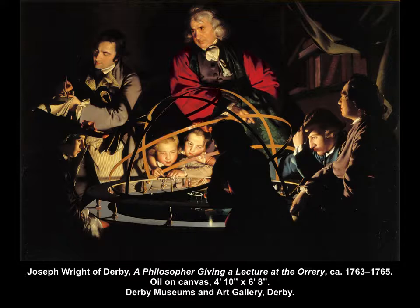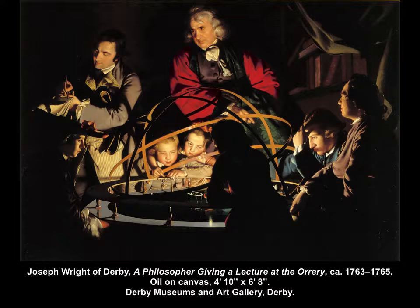Wright's use of light and shadow echoes the drama of the Baroque tenebrism. However, the Baroque scenes used tenebrism to dramatize religious narratives, and here Wright uses it to illustrate how individuals are being brought into the light with knowledge of the natural world, rather than dependence on religious beliefs and institutions. Everyone seems transfixed by the orrery, and the viewer is left imagining what these individuals will do next with their newfound knowledge.